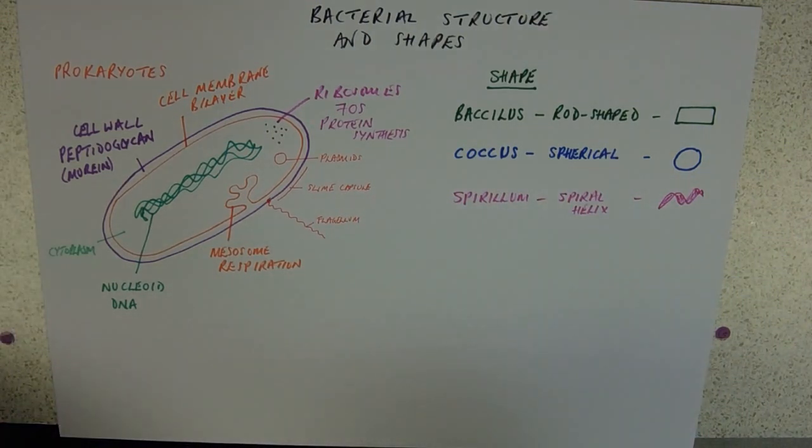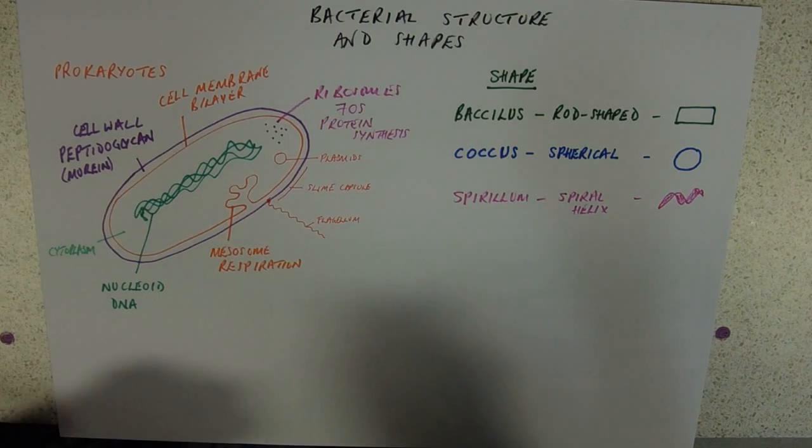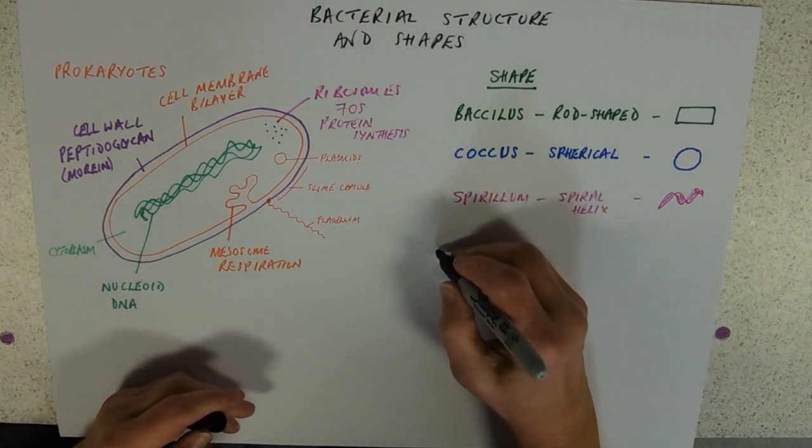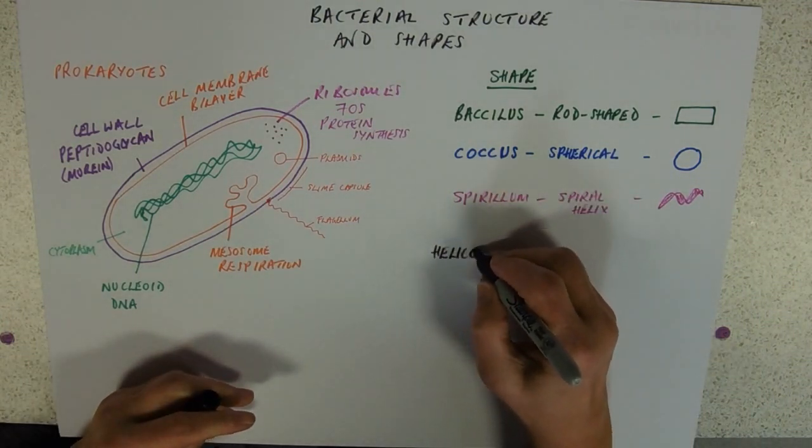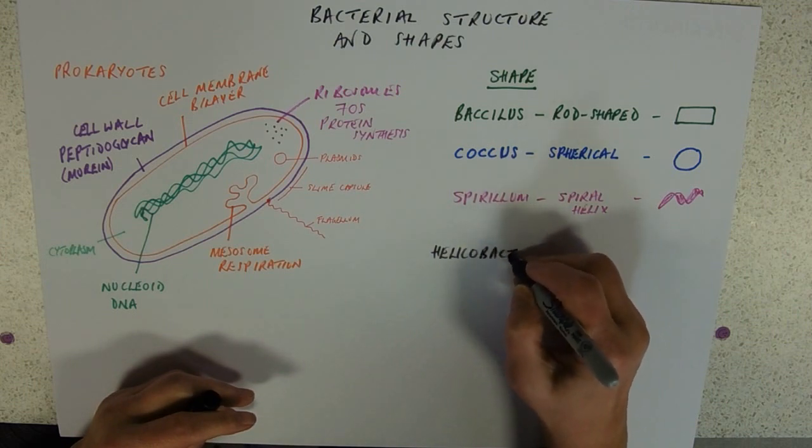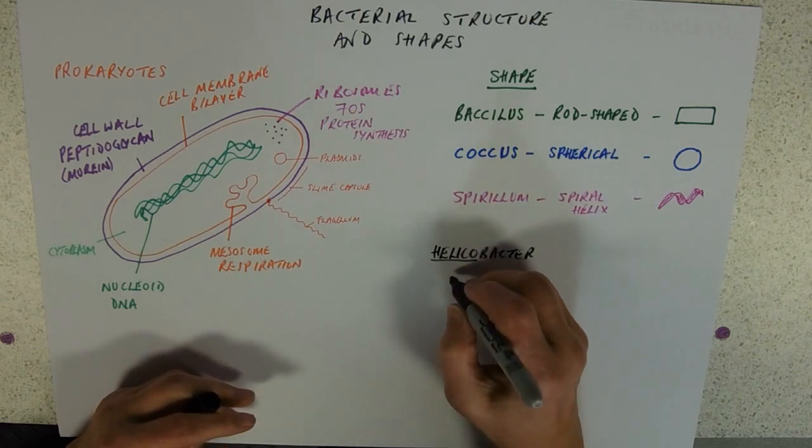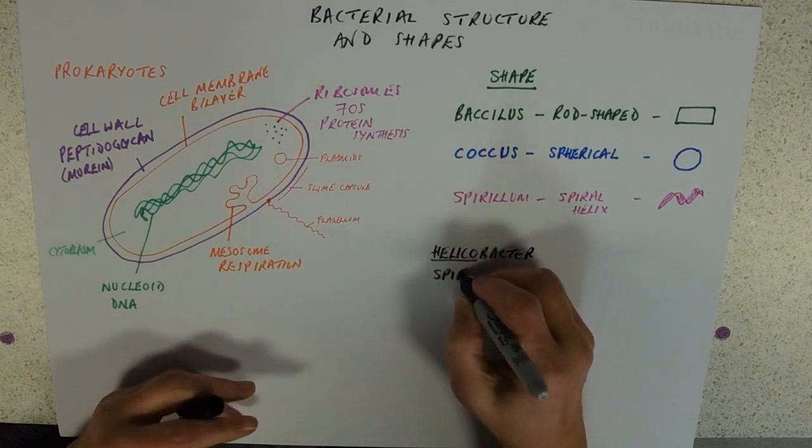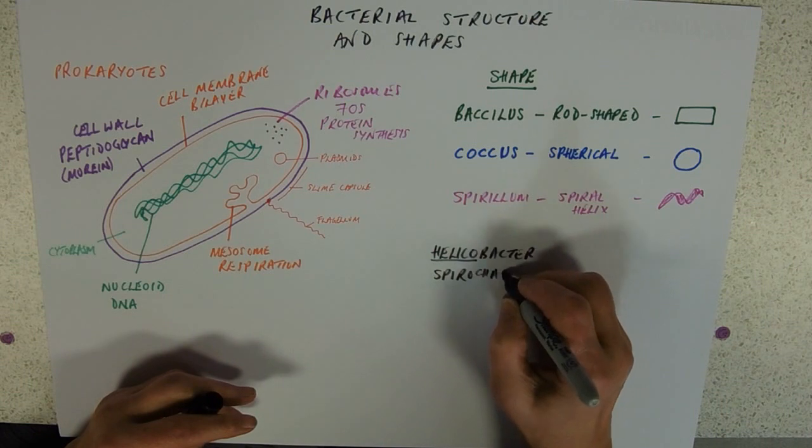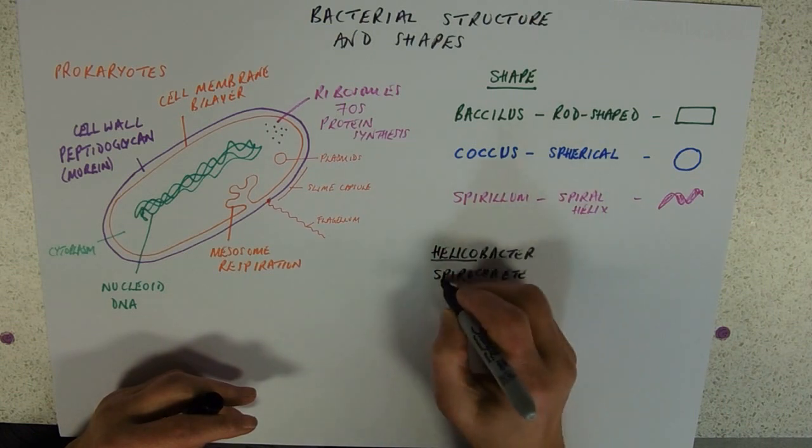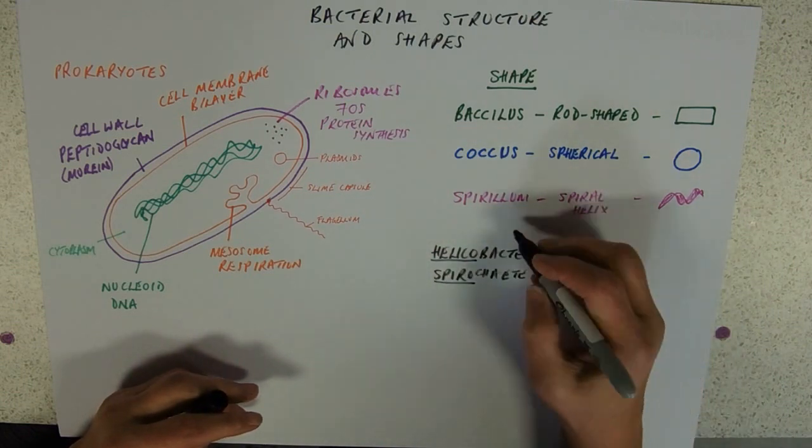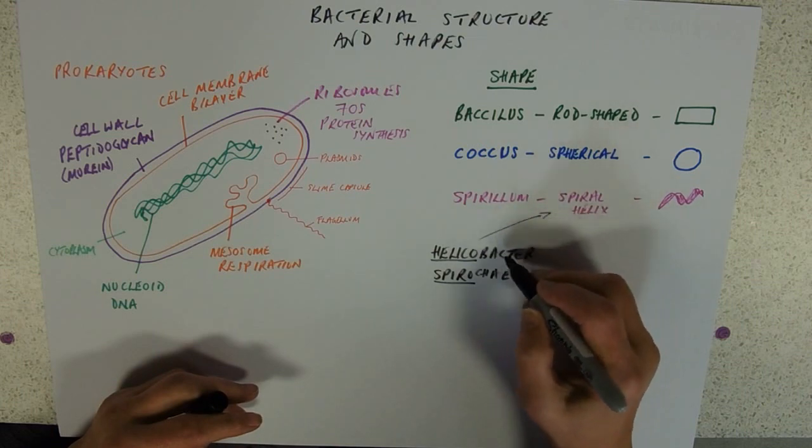So, how do you know what sort of bacteria you've been asked about? Quite a lot of them have clues in their names. So, for example, if you get something that is called helico, that's a dead giveaway. The spirochete. It's a dead giveaway that you're looking at spiral bacteria.